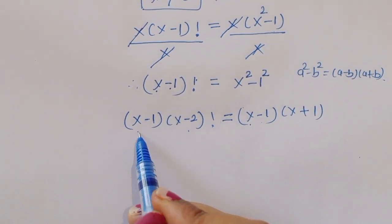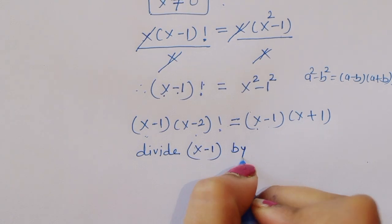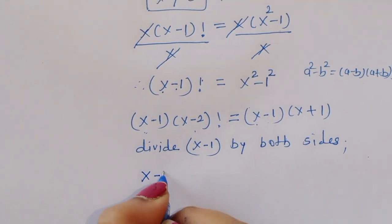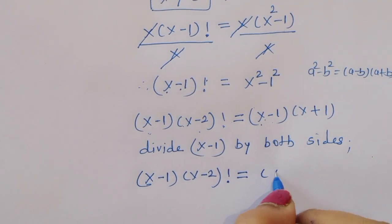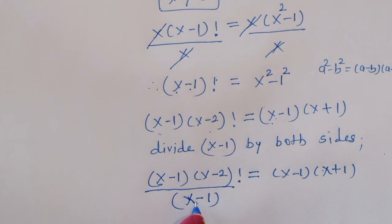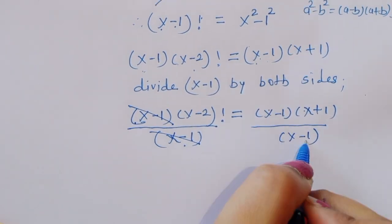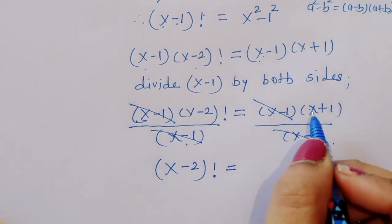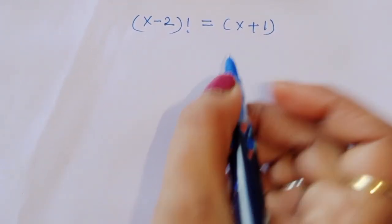Now we have (x minus 1) times (x minus 2) factorial equals (x minus 1) times (x plus 1). We can divide both sides by (x minus 1). After cancellation, we get (x minus 2) factorial equals x plus 1. This is equation 1.